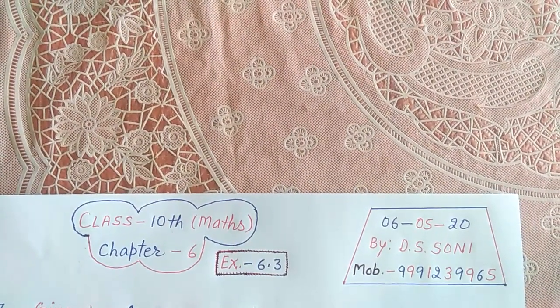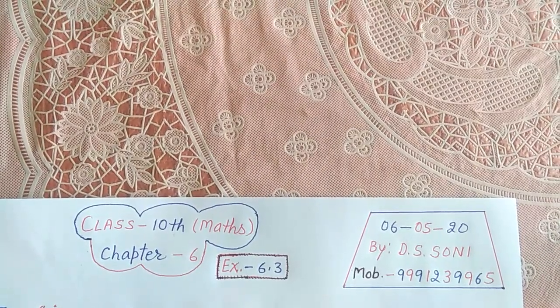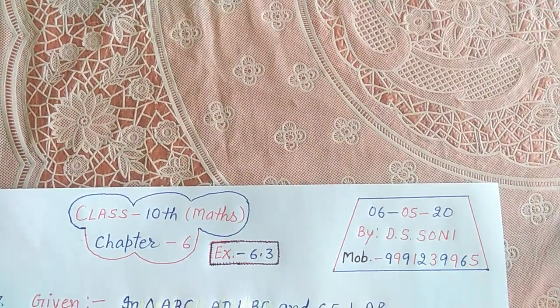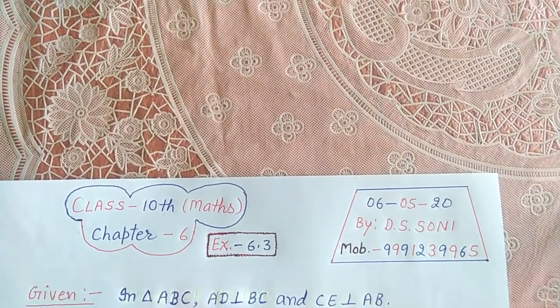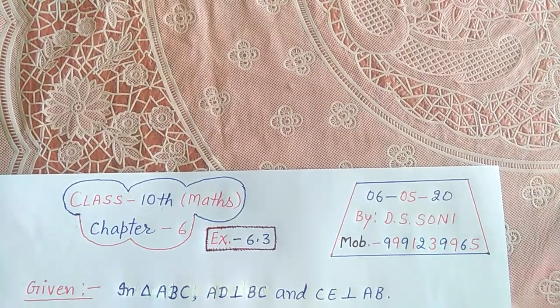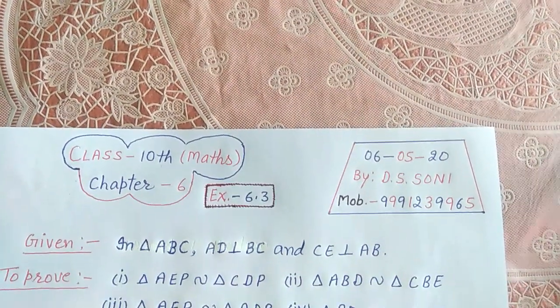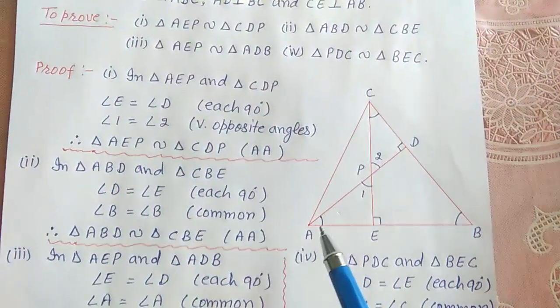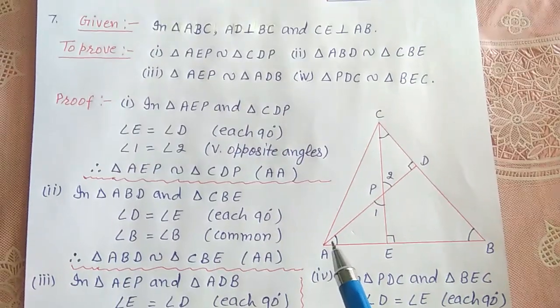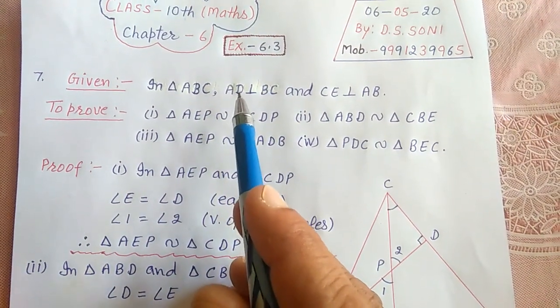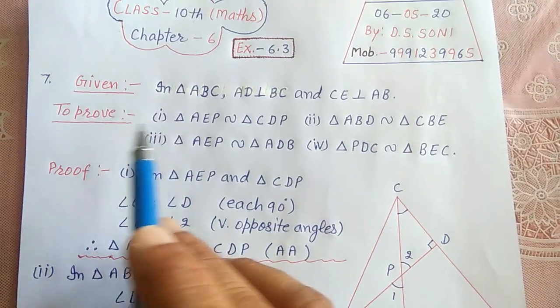In the figure, altitudes AD and CE of triangle ABC intersect each other at point P. We have to prove: first part, triangle AEP similar to triangle CDP; second part, triangle ABD similar to triangle CBE; third part, triangle AEP similar to triangle ADB; fourth part, triangle PDC similar to triangle BEC. Given: in triangle ABC, AD is perpendicular to BC and CE is perpendicular to AB.